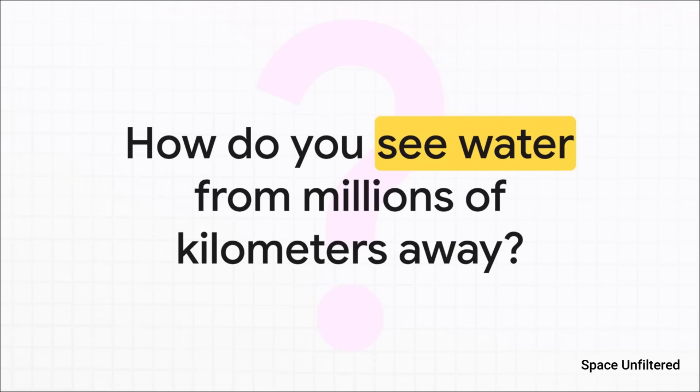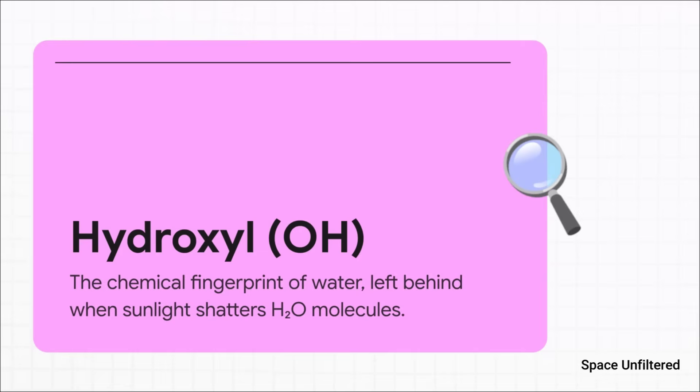The answer lies in looking for a very specific kind of chemical echo. Scientists don't actually detect the water molecule, H2O, directly. Instead they look for what you might call its chemical ghost, a little fragment called hydroxyl or OH. What happens is when sunlight hits a water molecule and basically shatters it, this hydroxyl fragment is left behind. And that fragment emits a faint but really distinct glow in ultraviolet light. That glow is the fingerprint they were hunting for.